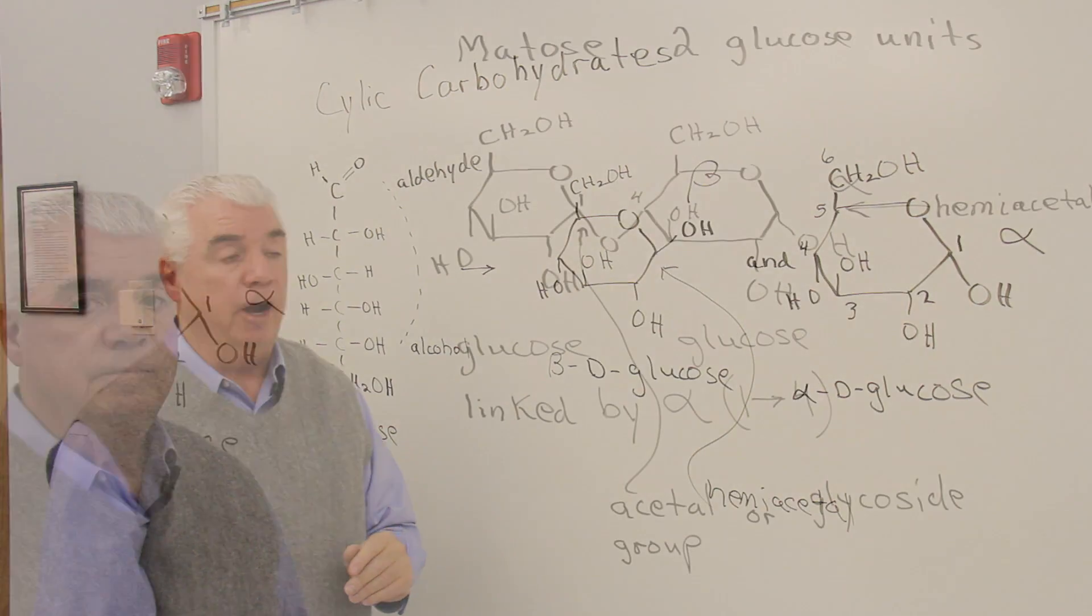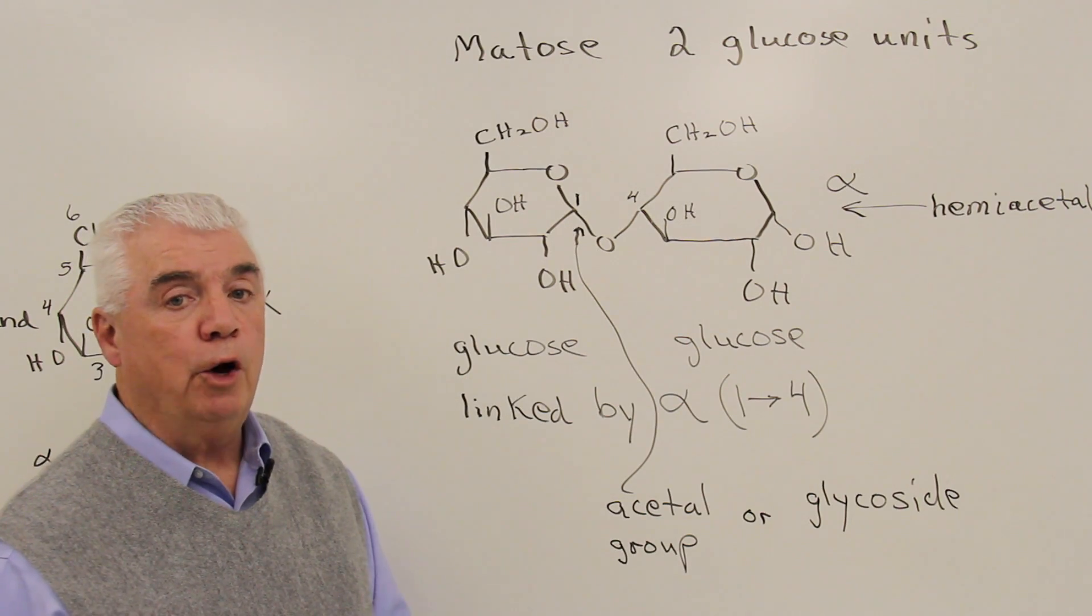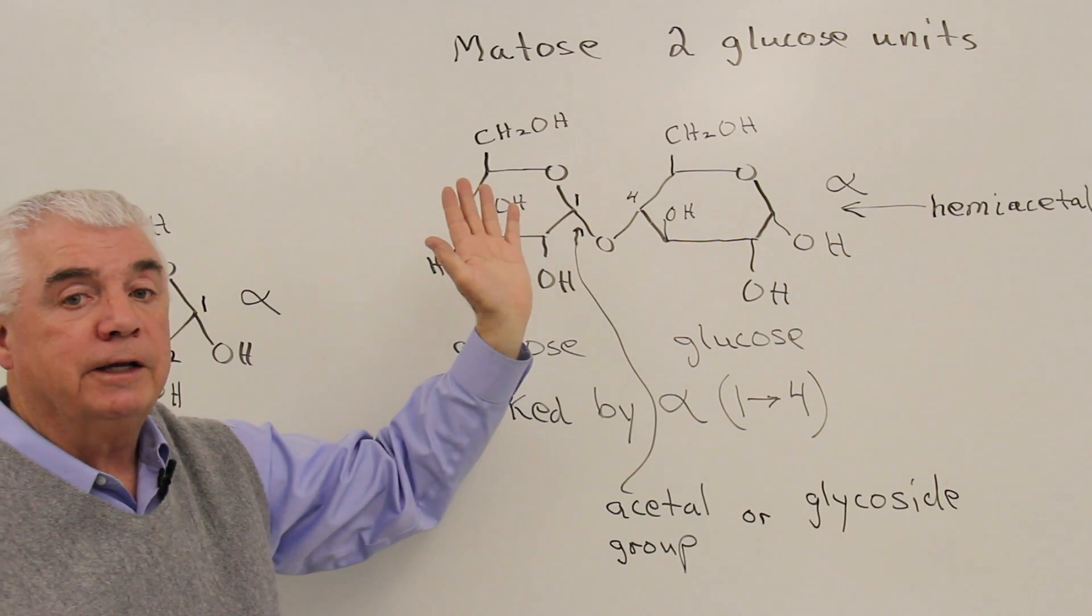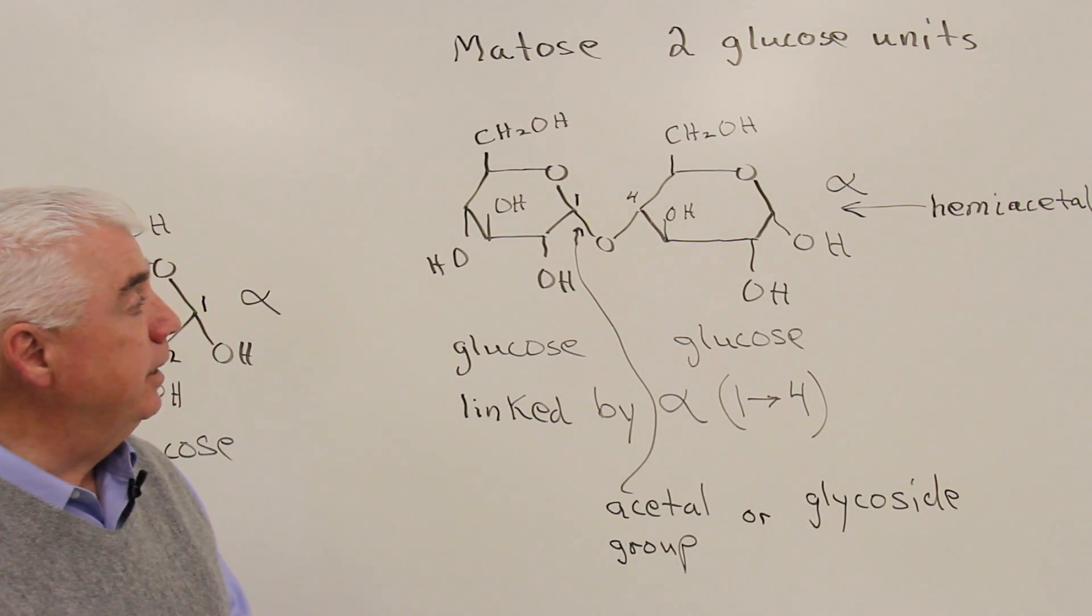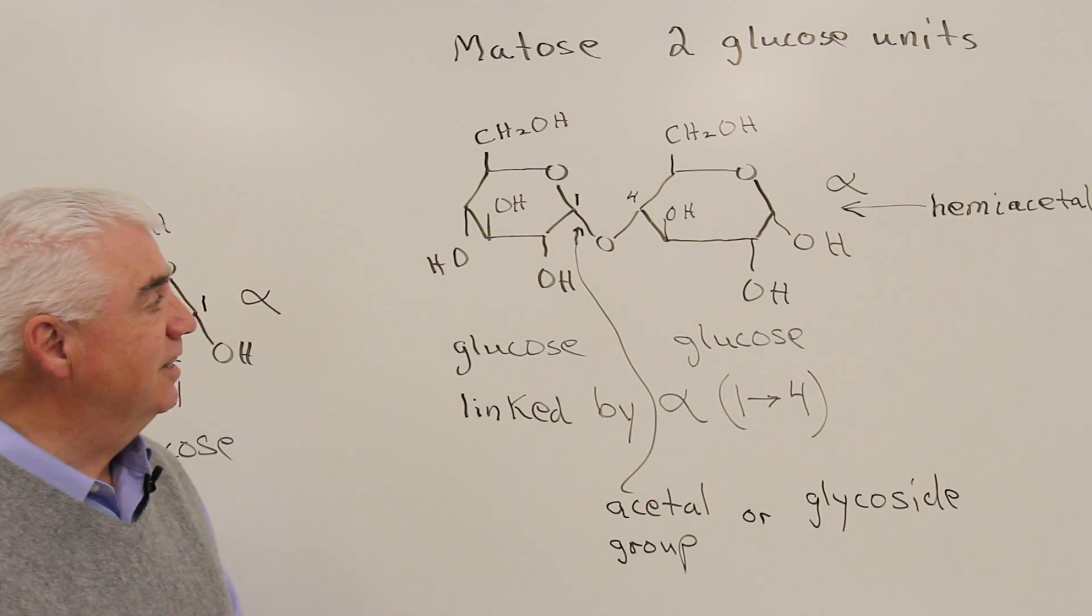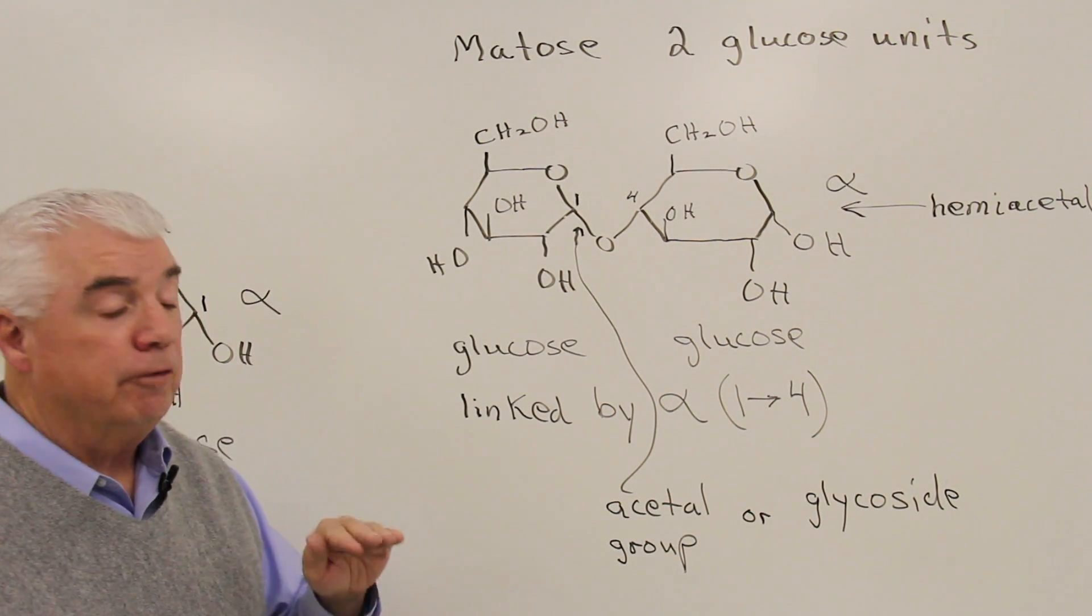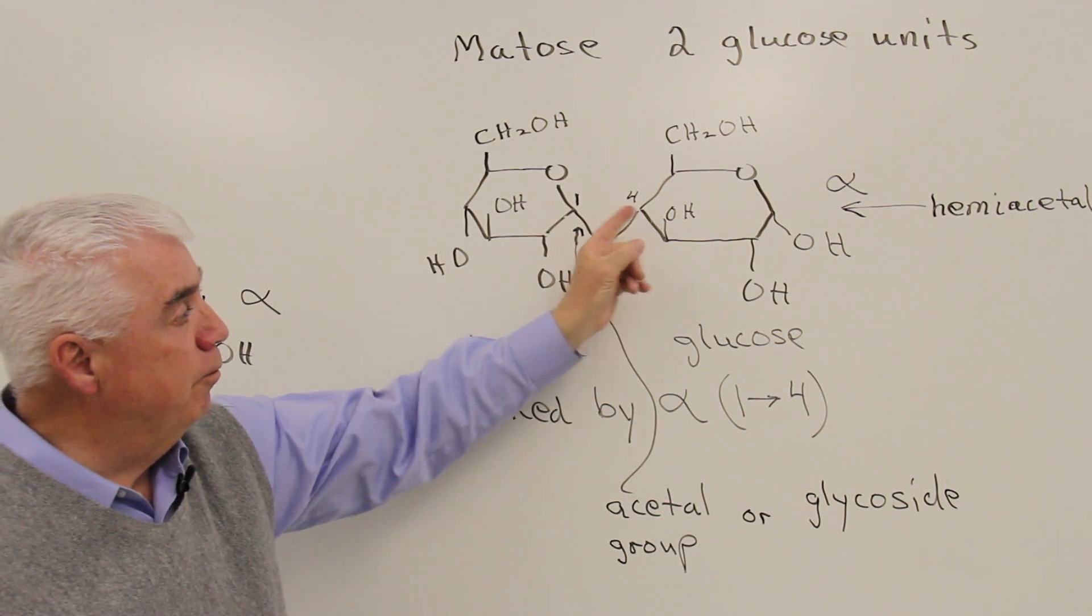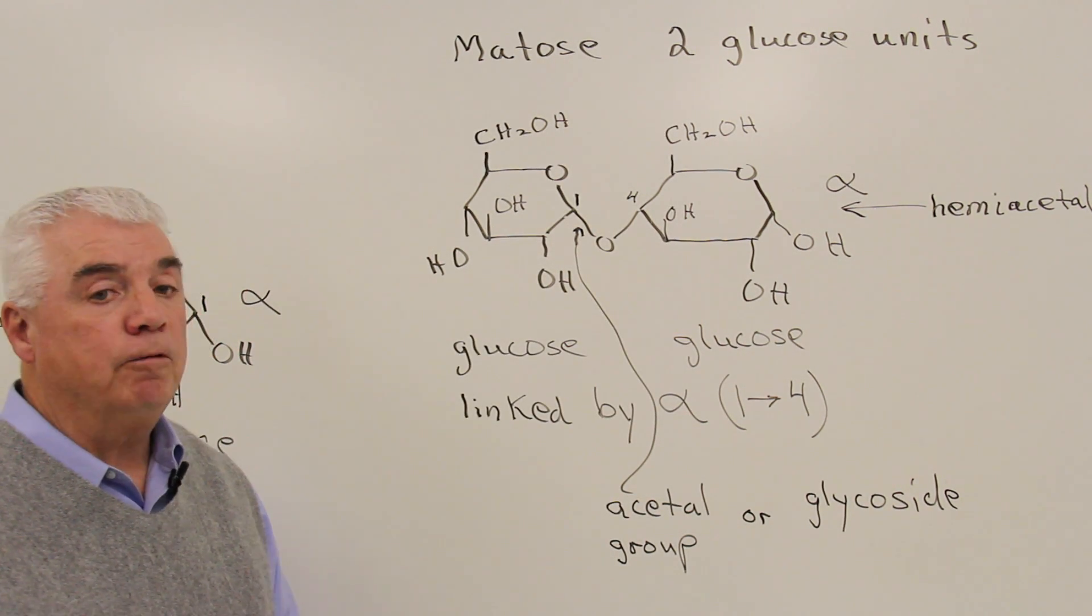Let's look at a disaccharide. Maltose is malt sugar. It's comprised of two glucose units. And again, we don't expect you to memorize the structure of maltose to be able to draw it. What we'd like you to know is that it's a glucose linked to a glucose, and in a specific way. They're linked by an alpha 1 to 4 linkage. Let's see if that makes sense. Here's position 1 of the glucose unit on the left. And remember, it can be up or down, and if it's down, it's alpha. And it's linked to the 4 position of the neighboring glucose unit. So it's an alpha 1 to 4.